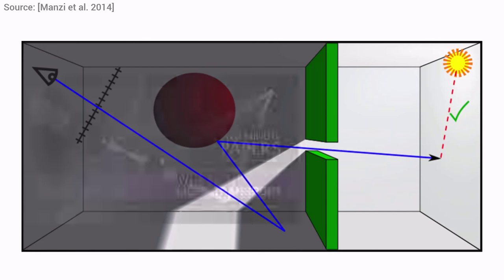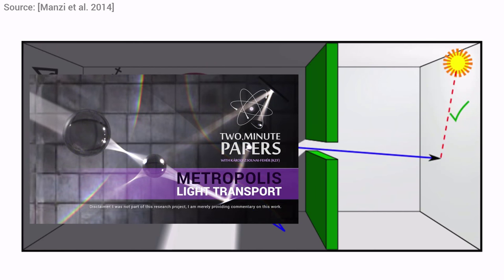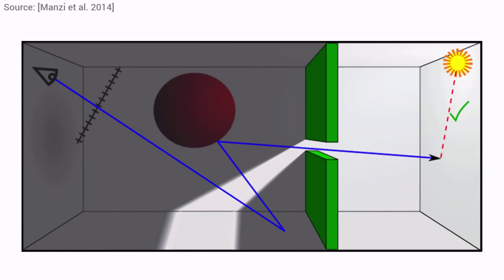If you have missed our earlier episode on Metropolis Light Transport, and if you're interested, make sure to watch it first. I've put a link in the description box. This time, let's go one step beyond classical light transport algorithms and talk about a gradient domain rendering technique and how we can use it to create photorealistic images quicker.